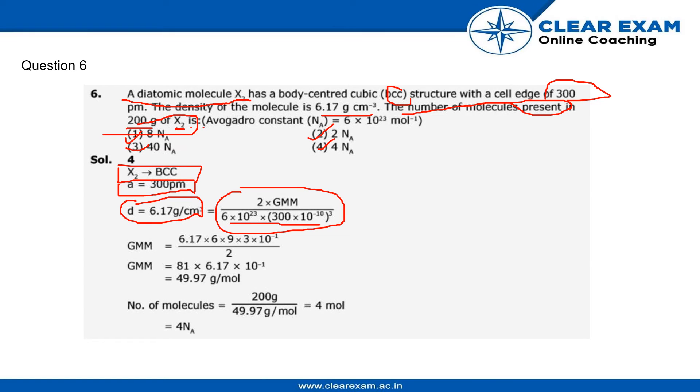The density formula is 2 times GMM upon Avogadro number. Here we can find GMM by using this calculation, multiplying by this and dividing. The GMM comes out to be 49.97 grams per mole.